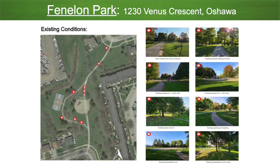Fenland Park is situated between Fenland and Venus Crescent in Oshawa, Ontario, with park access from both roads, and serves the surrounding residential neighbourhood. A number of existing features and program elements make up Fenland Park, including existing asphalt pathways, one play precinct and play equipment on sand surfacing, one existing asphalt basketball court, a central seating node, pathway lighting, site furnishings such as benches and litter receptacles, and a large number of mature shade trees.